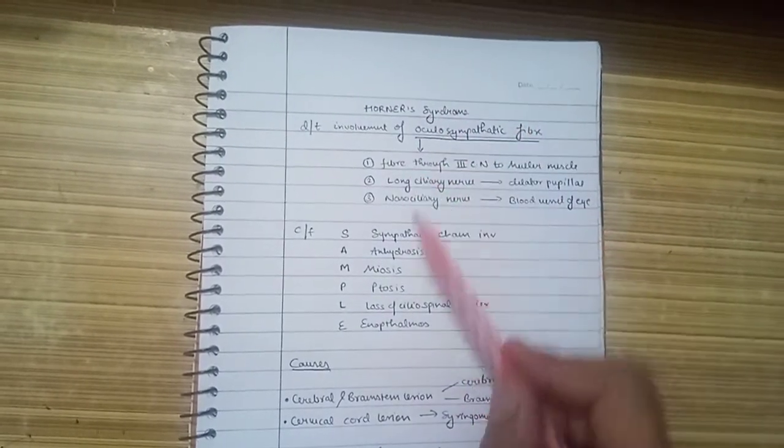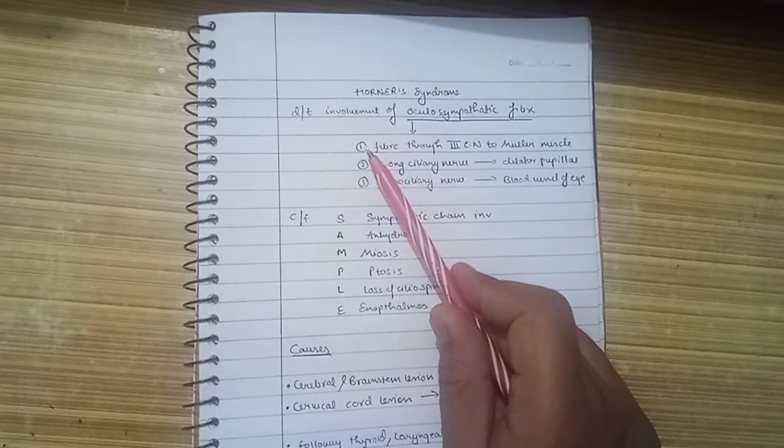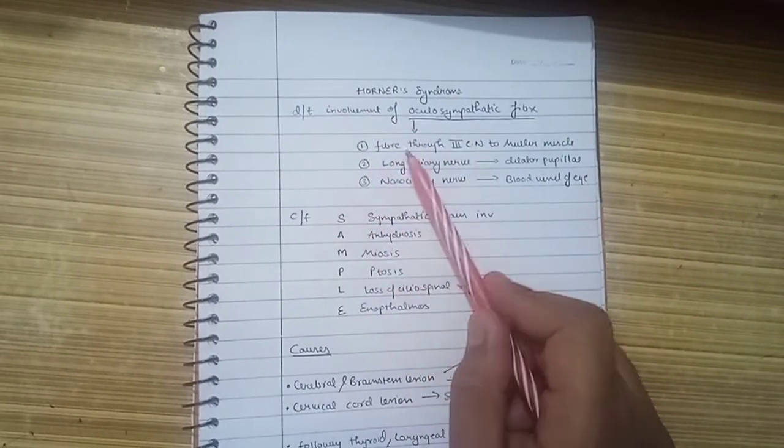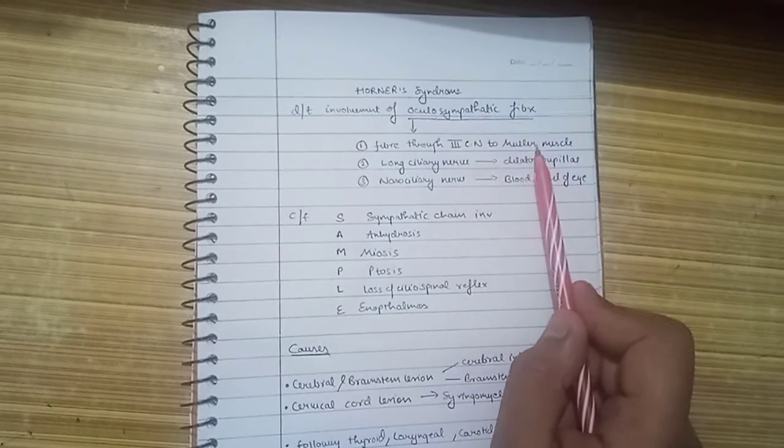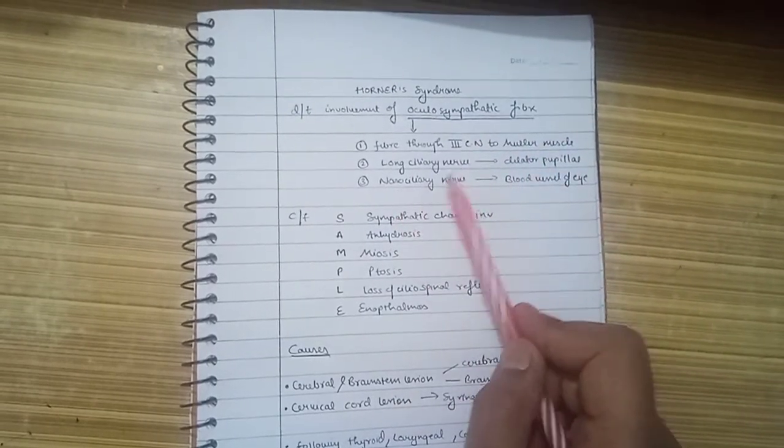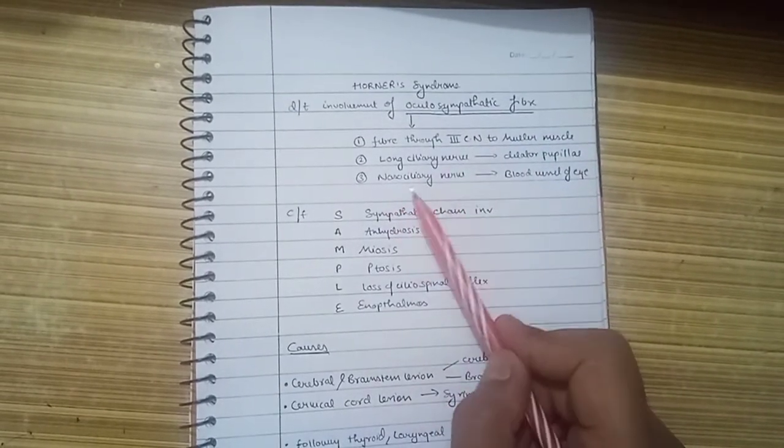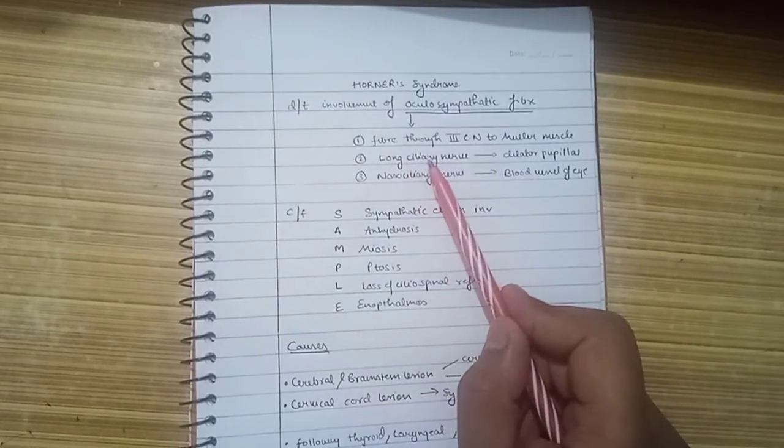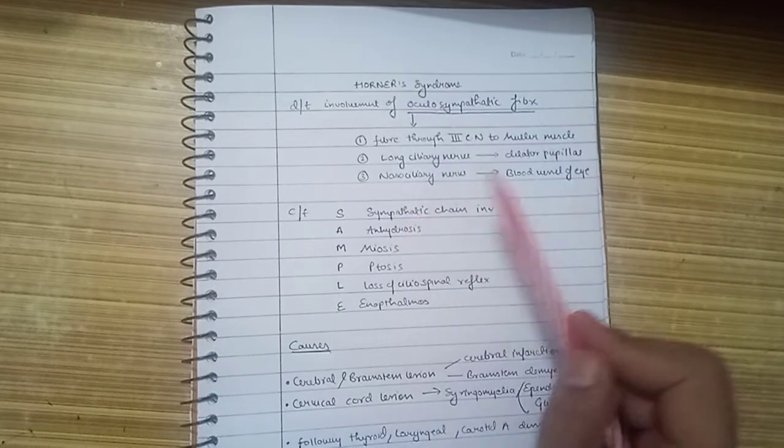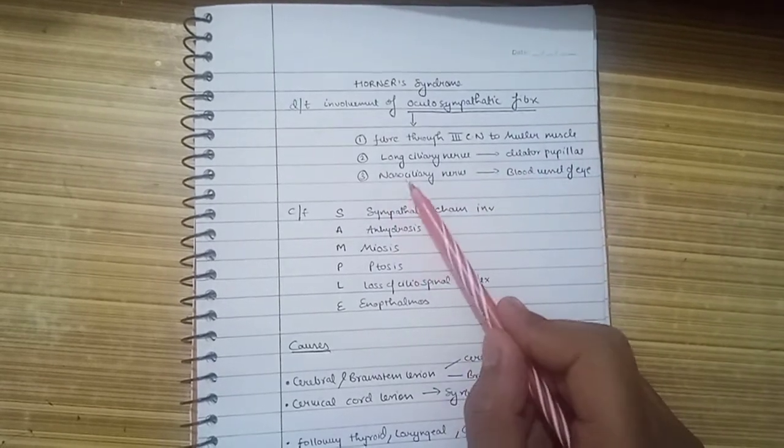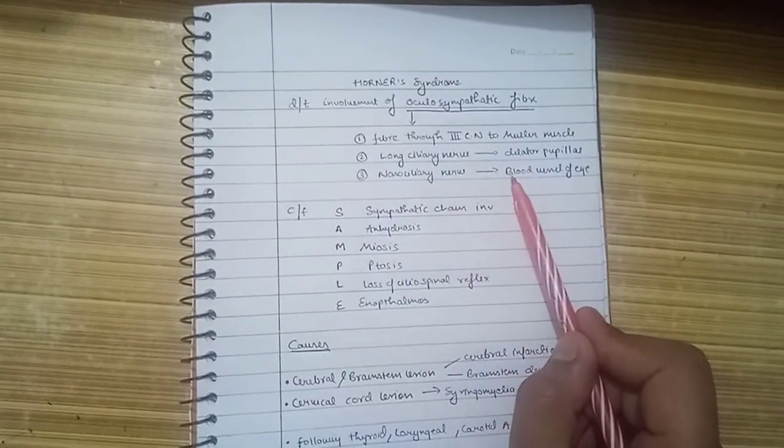Now these fibers go through three routes: the fibers going through the third cranial nerve supplying the Müller muscle that helps in elevation of the upper eyelid, and the long ciliary nerve that supplies the dilator pupillae.